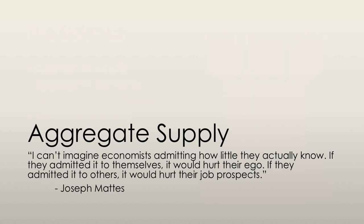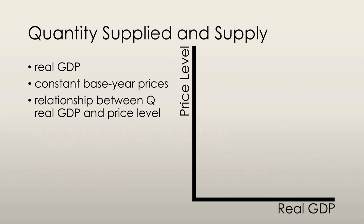Let's start by taking a look at aggregate supply. The quantity of real GDP supplied is the total quantity of goods and services valued in constant base-year dollars that firms plan to produce in a given period. Constant base-year dollars means we're looking at real GDP and not nominal GDP. The quantity depends on the quantity of labor, physical capital, human capital, and technology — but capital and technology are said to be fixed at any given time.